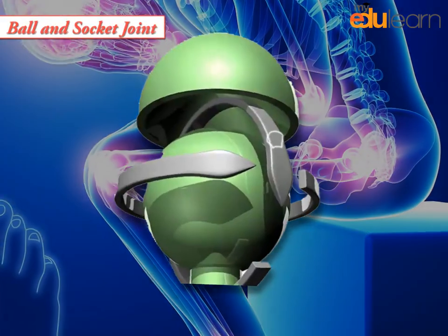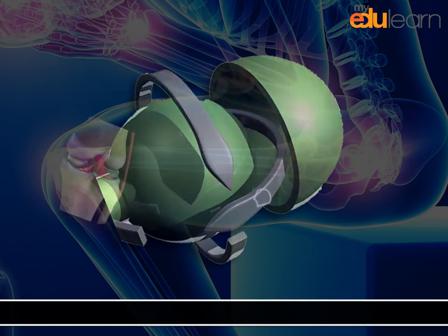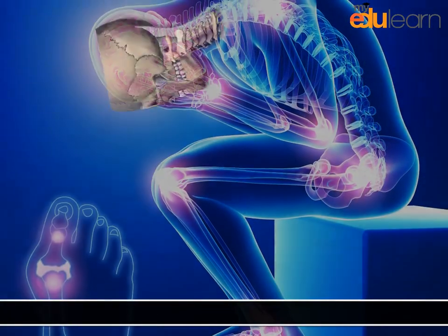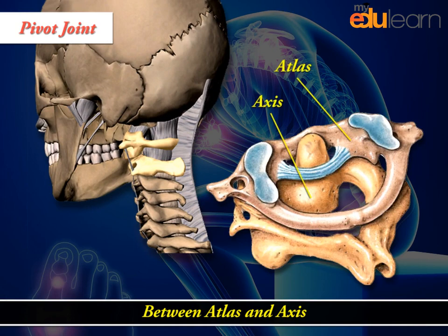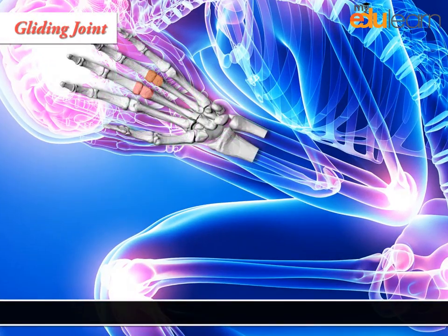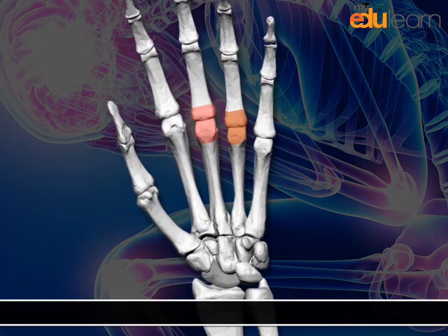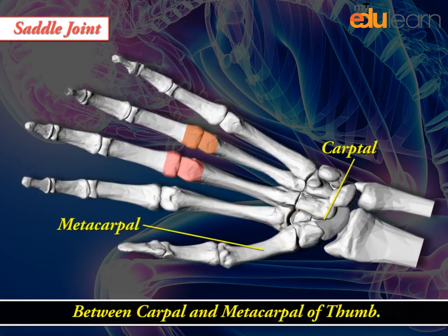Ball and socket joint between humerus and pectoral girdle. Hinge joint — knee joint. Pivot joint between atlas and axis. Gliding joint between the carpals. Saddle joint between carpal and metacarpal of the thumb.